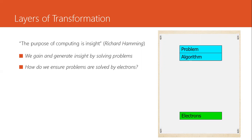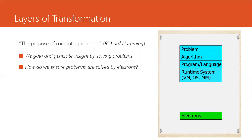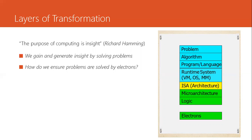We have the problem, which gets transformed into an algorithm by mathematicians who carry out rigorous mathematical formulation. The algorithm needs a programming language understandable by the machine. This program needs system-level support such as a compiler to transform the code into something understood directly by the machine, and it requires the services of an operating system, memory management modules, and virtual memory. Then we have the instruction set architecture — the legal operations the user can perform on the processor. The implementation of the ISA is called the micro-architecture, which is transformed into logic, then into circuits, and ultimately runs on electrons.